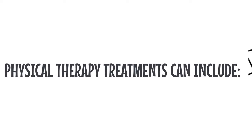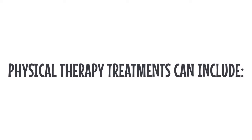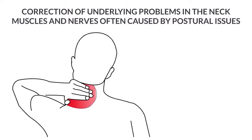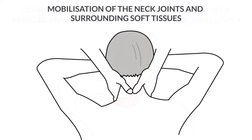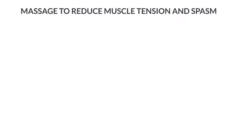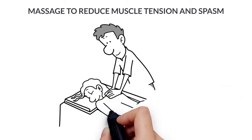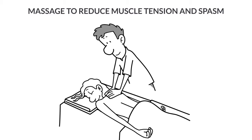Physical therapy treatments can include correction of underlying problems in the neck muscles and nerves, often caused by postural issues, mobilisation of the neck joints and surrounding soft tissues to relieve tension on muscles and nerves, and massage to reduce muscle tension and spasm.